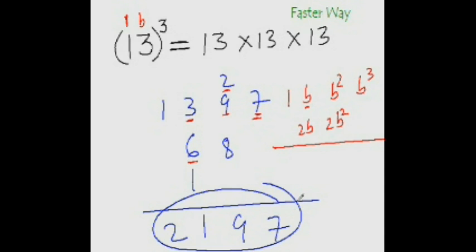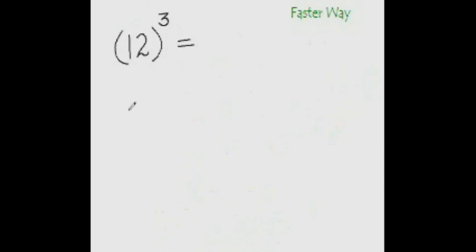Let's check out more examples. Let's find out what is 12 cubed. Again we will do the same thing. Mark the digit at the unit's place as B and this is 1. Now write the numbers in this pattern: 1, 2, 2 squared is 4, and 2 cubed is 8.